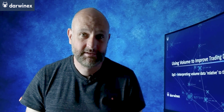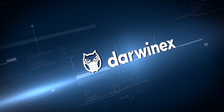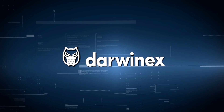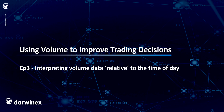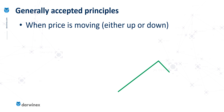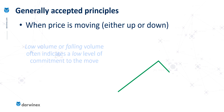I'm going to explain the principles of how to do that in this episode. So let's take this up where we left it last time. We looked at this principle of measuring the volume during a particular price move — for example, as the price is falling, the volume is low or falling itself. We talked about the way that this indicates there's a low level of commitment to the move.